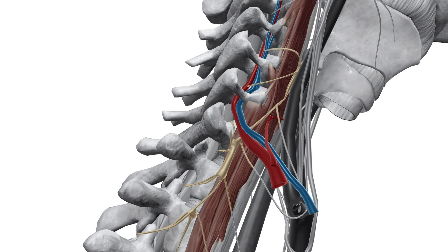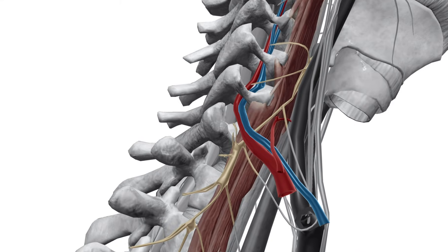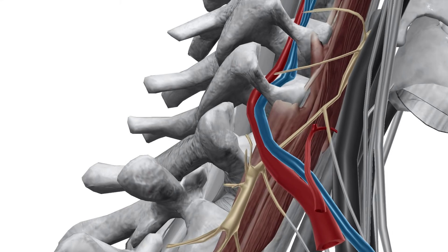The vertebral artery and vein run close to the base of the C7 transverse process and then ascend within the foramen transversarium of each cervical vertebra starting with C6. The inferior thyroid artery comes off the thyrocervical trunk and arcs medially across the longus colli just above the stellate ganglion. Taking a closer look, you can see that the stellate lies at the base of the C7 transverse process.